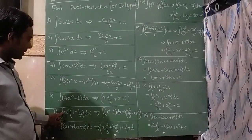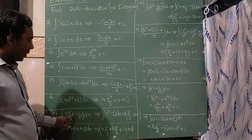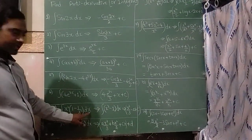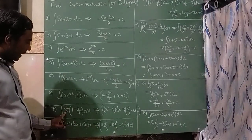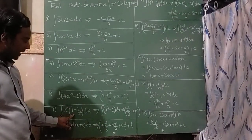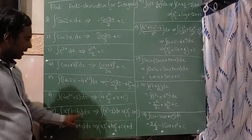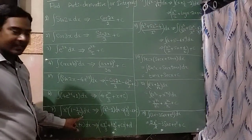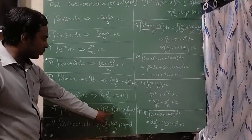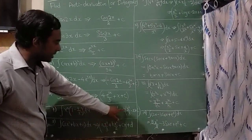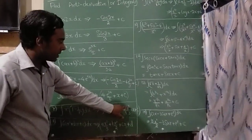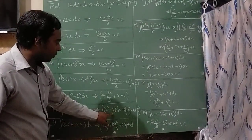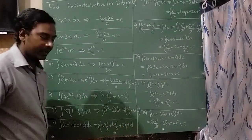The seventh question is integration of x square times (1 minus 1 divided by x square) dx. Multiplying x square inside: x square into 1 is x square, and x square divided by x square gives 1. So integration of x square is x cube divided by 3, and integration of 1 is x, plus c.